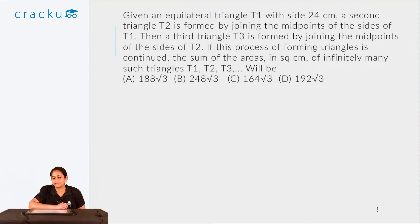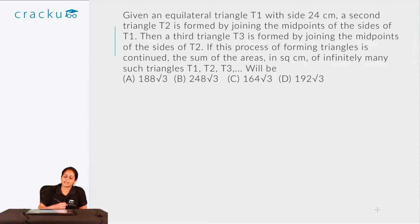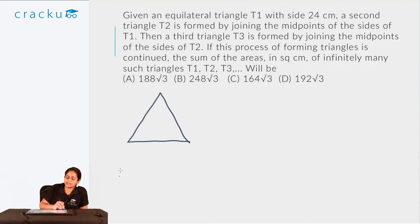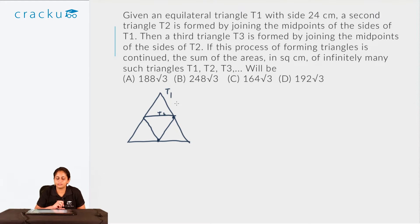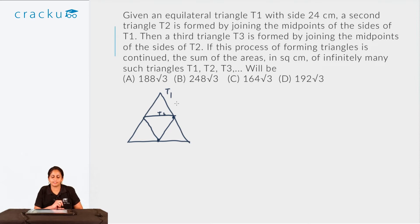Now let us take a look at another question from geometry. Given an equilateral triangle T1 with sides 24 centimetres, a second triangle T2 is formed by joining the midpoints of the sides of T1, and a third triangle T3 is formed by joining the midpoints of the sides of T2. If this process is continued, what is the sum of the areas in square centimetres of infinitely many such triangles T1, T2, T3...?